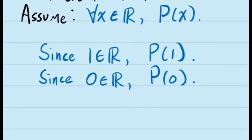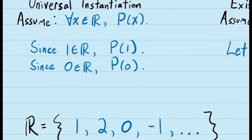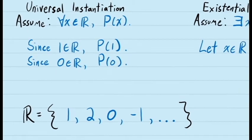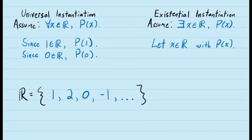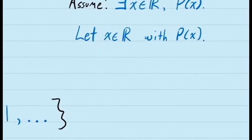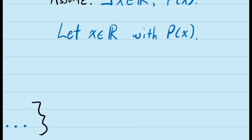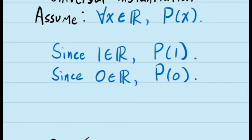It's also worth mentioning that it is not logically valid to speak about x as an arbitrary real number. Whatever we do with this assumption, it needs to be applied to specific real numbers that we know about. In other words, we could not just say 'let x be a real number, therefore p(x).' We have to talk about specific real numbers.